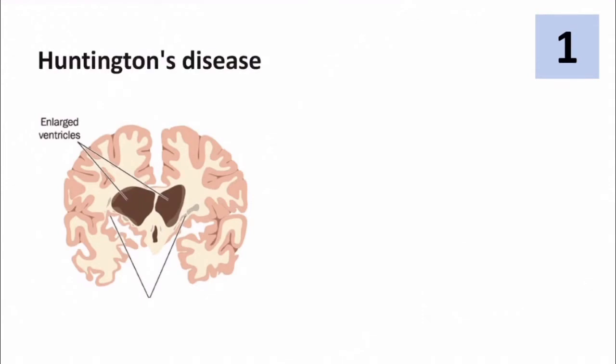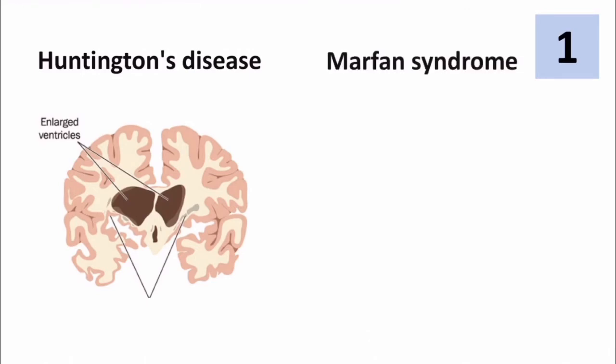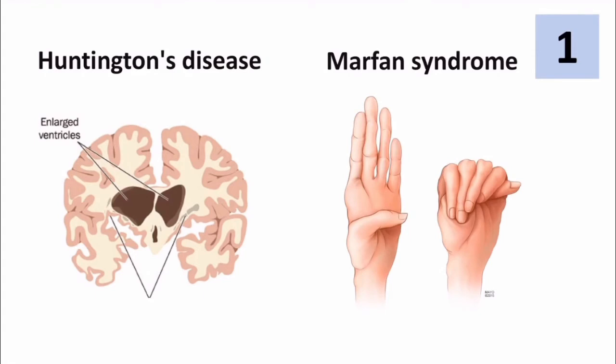Huntington's disease is a neurodegenerative disorder, mostly affecting the basal ganglia. Marfan syndrome is a connective tissue disorder. Usually, the patient has a large stature and long arms and fingers.